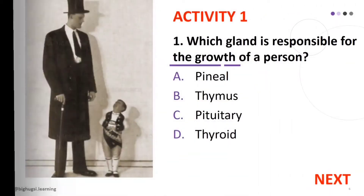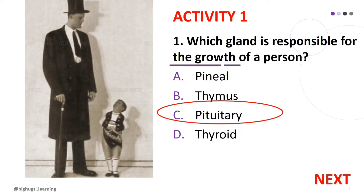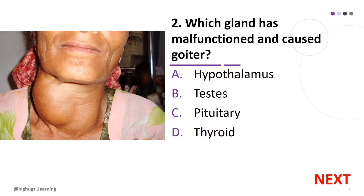For your activity 1, let us check your understanding about the endocrine system. You will be given 5 seconds to answer each question. Number 1: Which gland is responsible for the growth of a person? A. Pineal gland, B. Thymus gland, C. Pituitary gland, D. Thyroid gland. The correct answer is C, Pituitary.